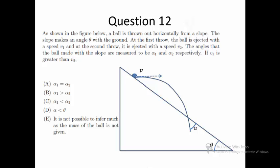When being thrown horizontally, the ball moves with a constant horizontal velocity, but vertically it is accelerated downward by gravity. If the horizontal velocity is slow, the vertical component will dominate and the ball will hit the slope near the starting point, resulting in a larger inclination. If the horizontal velocity is fast, the ball will hit the slope at a further distance, resulting in a smaller inclination.